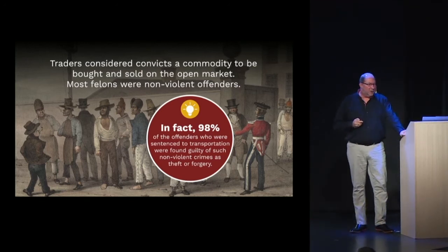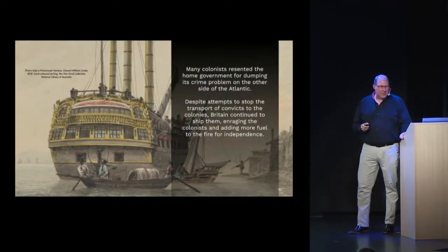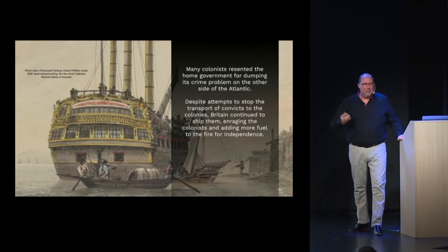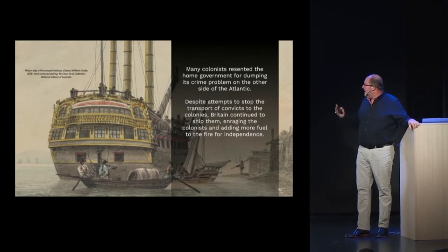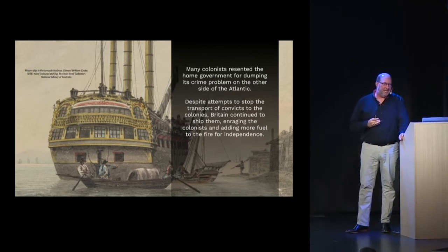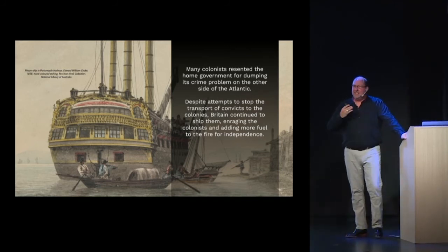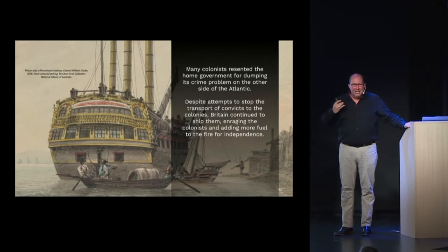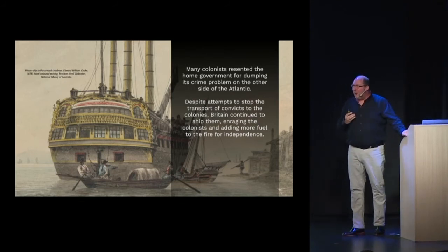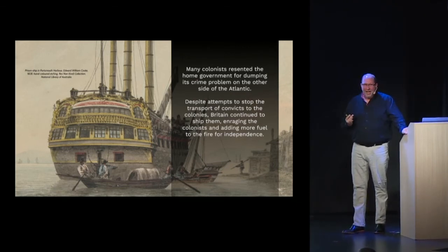The people in the United States were very angry with Britain sending all these convicts. Despite attempts to stop the transports, Britain continued to ship them — continuing to send the least desirable people. Consider what this did to the mentality of people who wanted to form a new society in the United States. This was really the fuel for the fire that continued to enrage them against the British crown.